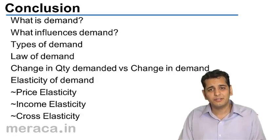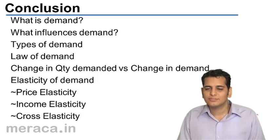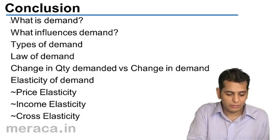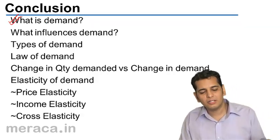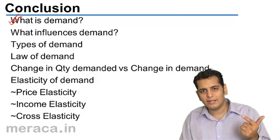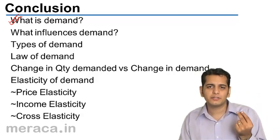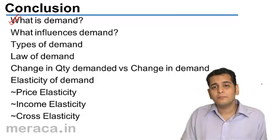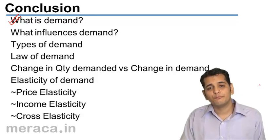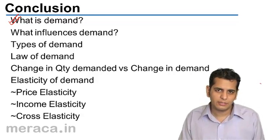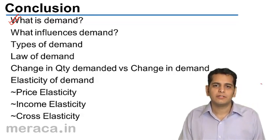We are done with this chapter, let's just take a quick revision of what we've done. In this chapter, we have done what is demand. We said demand is nothing but desire backed by ability to purchase and willingness to purchase — these three together constitute demand. In economics, demand is also defined as various quantities of commodities which a consumer is ready to purchase at a given price during a given period of time in one market.